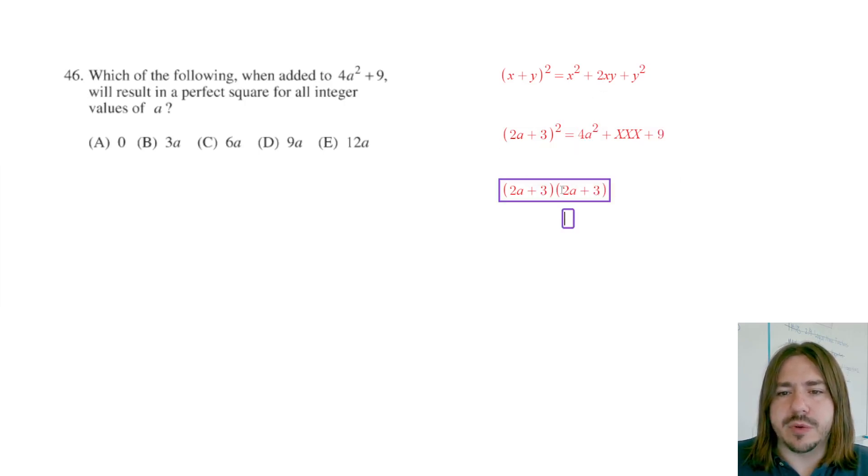And these have to be the same when we're trying to factor this because we are trying to make this a perfect square, meaning we want both factors to be the same.